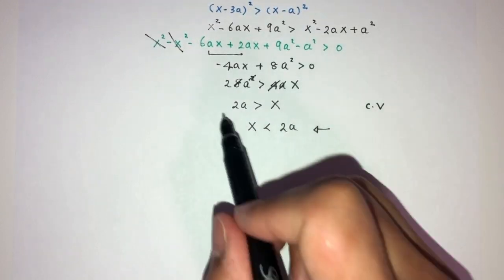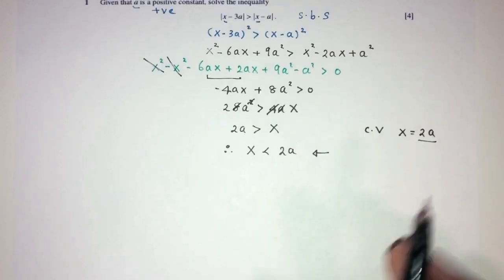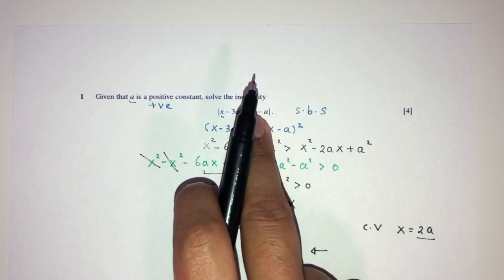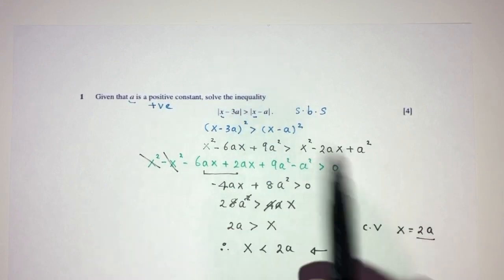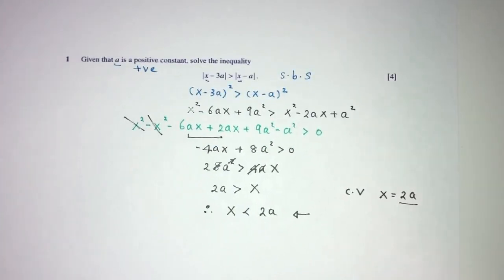That's why this will be your only solution. And the critical value here is obviously X equal to 2A, this is where they meet. But for this to be true, this inequality, there is no equal sign, it has to be less than 2A for this question. And that is your question number 1.